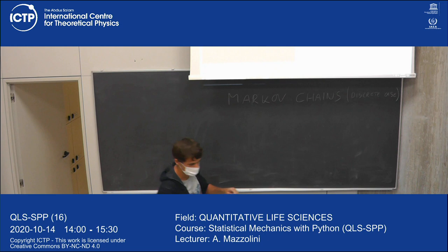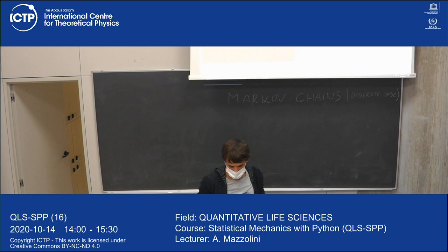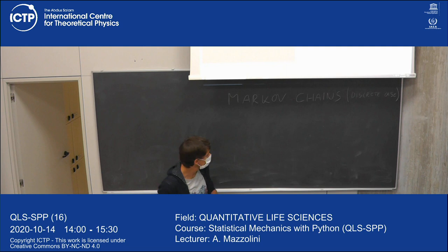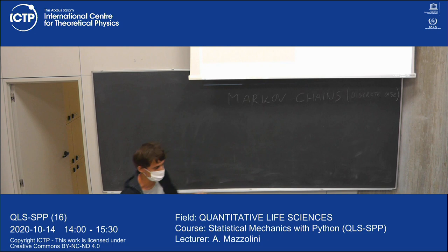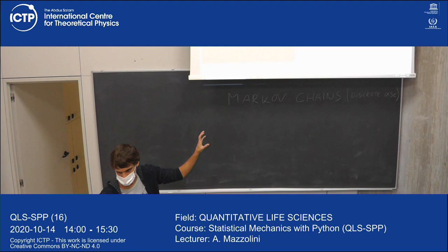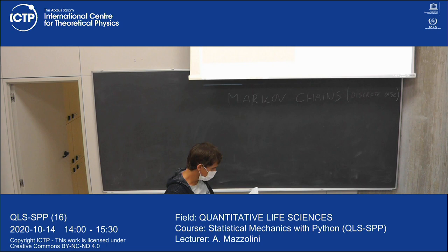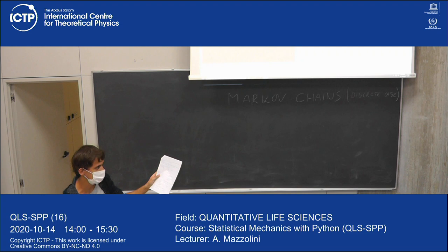Statistical mechanics works at equilibrium — a very special condition — and for large numbers of components. Markov chains, instead, can work out of equilibrium: it's a dynamical process that changes with time, and it can also work for very small systems. So it's much more general than the tools you have in statistical mechanics.